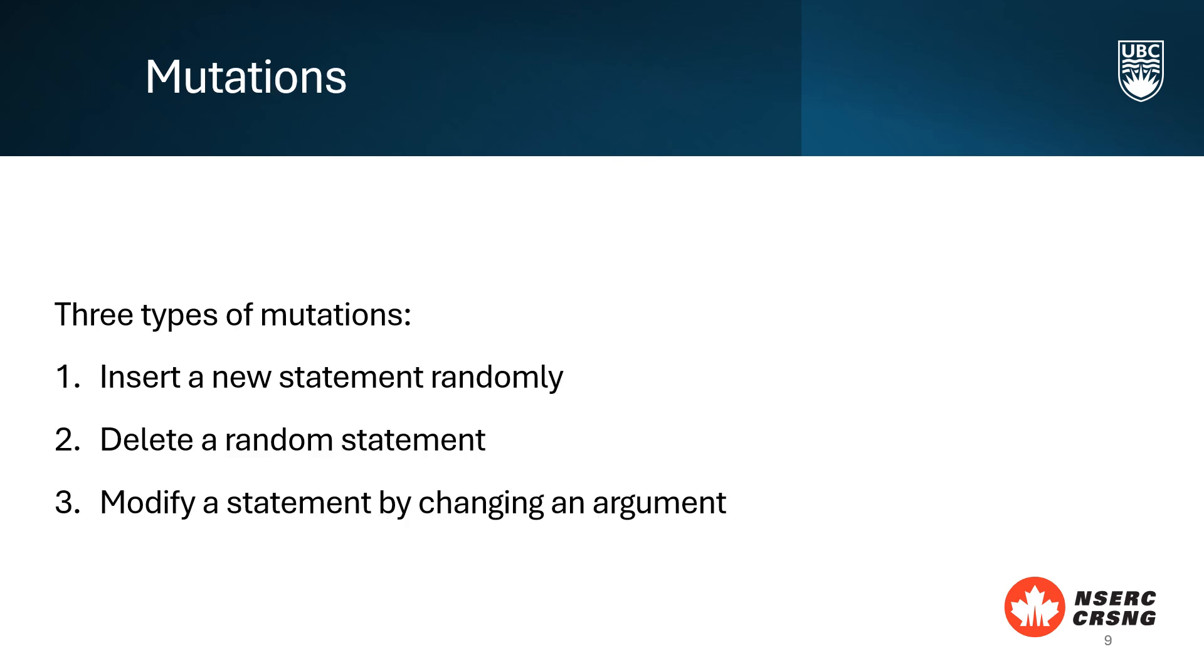Next, let's discuss mutations in our evolutionary search. There are three types of mutations: inserting a new statement at a random location with random functions and arguments, deleting a randomly chosen statement, and modifying a random statement by altering one of its arguments. This could involve replacing it with an existing variable or a new constant. These mutations help us explore a wide range of potential optimizations.